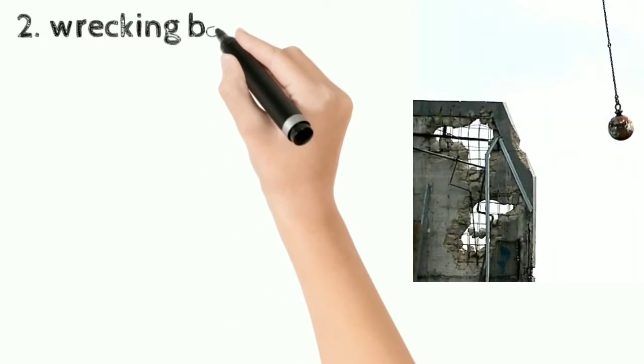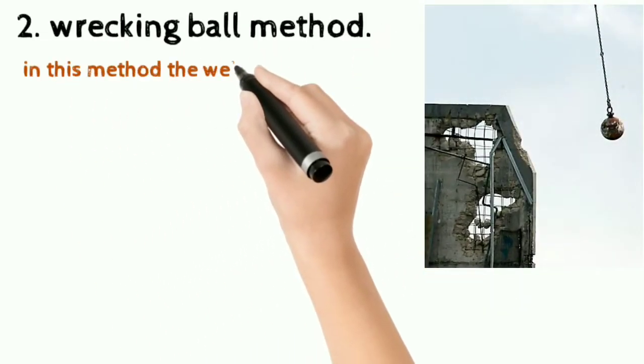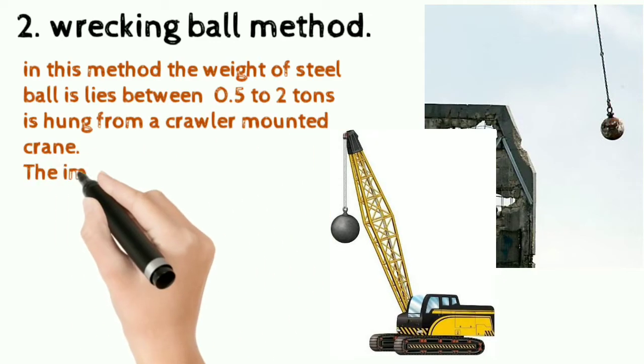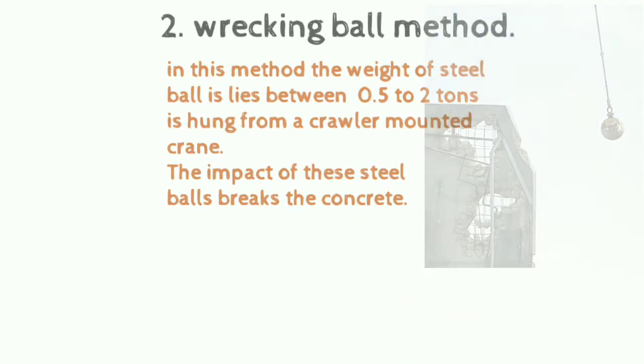2. Wrecking Ball Method: In this method, the weight of a steel ball, which lies between 0.5 to 2 tons, is hung from a crawler-mounted crane. The impact of these steel balls breaks the concrete.